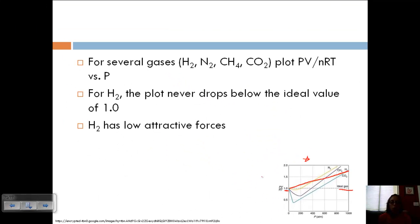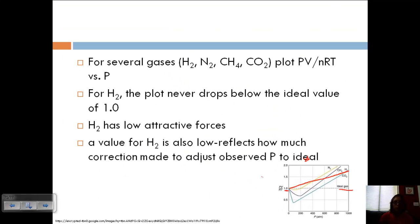This means that hydrogen has low attractive forces. So that means that the A value for H2 is also low. And this reflects how much correction had to be made to adjust the observed pressure to the ideal pressure. So a low A value means there are weak intermolecular forces between the atoms in the compound.